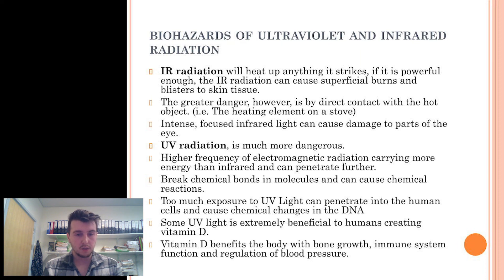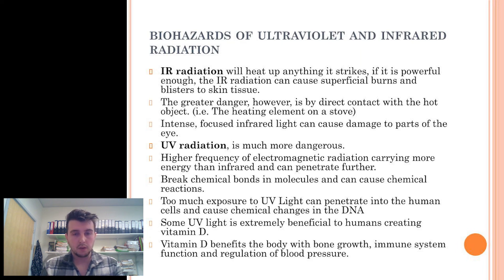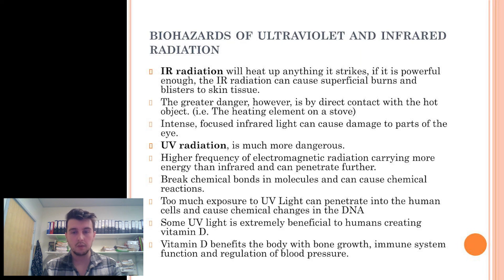UV radiation is much more dangerous. UV light has a higher frequency which causes it to carry more energy than infrared and to penetrate further — it is closer to X-rays than to infrared. UV light can break chemical bonds in molecules and cause chemical reactions to take place. Too much exposure to UV light can penetrate into human cells and cause chemical changes in the DNA, which can result in mutations and cancerous cell development. Some UV light is extremely beneficial to humans, creating vitamin D, with benefits including bone growth, immune system function and regulation of blood pressure.